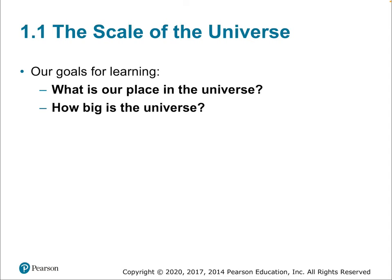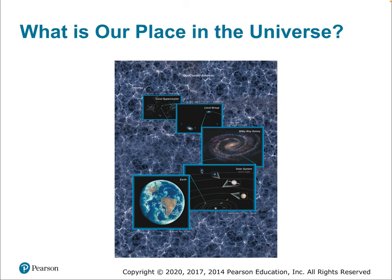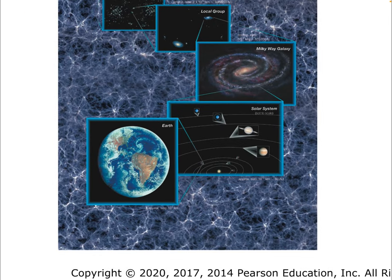Let's get to section 1.1, the scale of the universe. Our goals: what is our place in the universe and how big is it? To give you some idea of scale, our entire Earth with a radius of about 6,000 kilometers is just a small dot on the scale of the entire solar system — so small you absolutely would not be able to see it on screen. Jupiter and Saturn are much bigger than Earth, and the terrestrial planets like Earth are smaller.